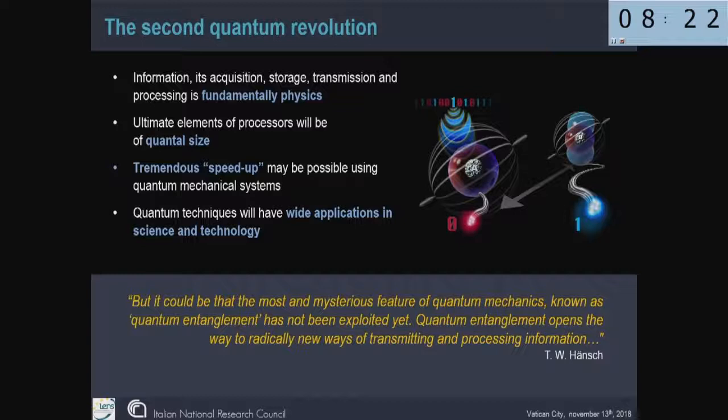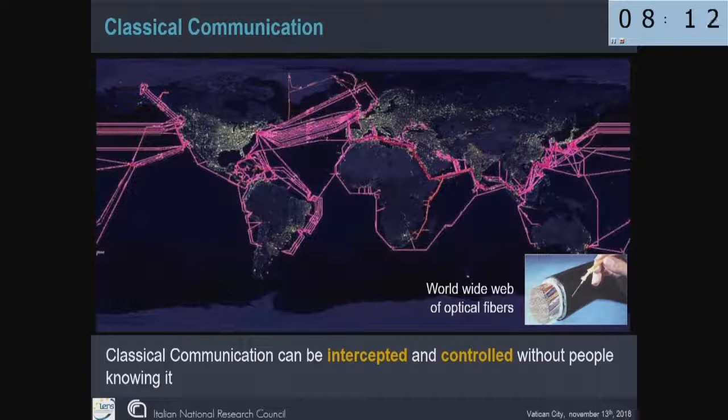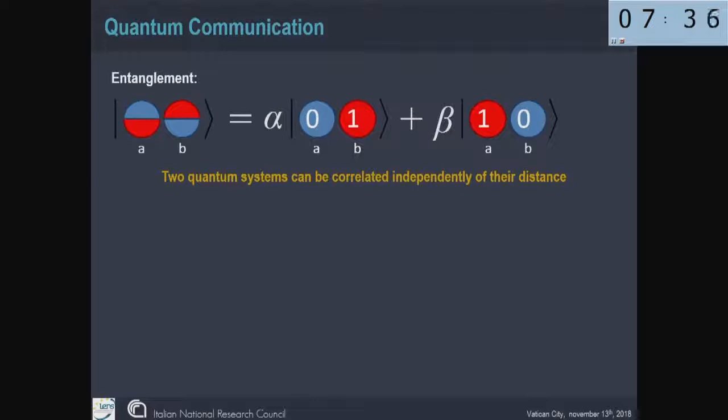This entanglement, for instance, can be used. It is already used in communications. You know that optical communications now allow us to transfer information data from one side to the other in the world. But for instance, classical communication can be intercepted or controlled, and people who are transmitting information don't know this.